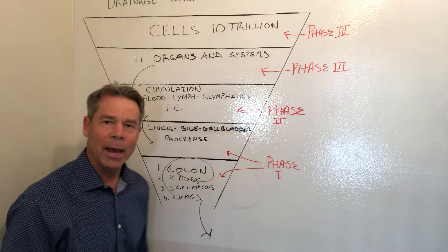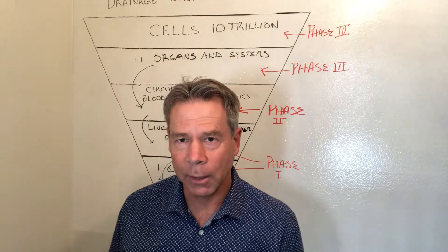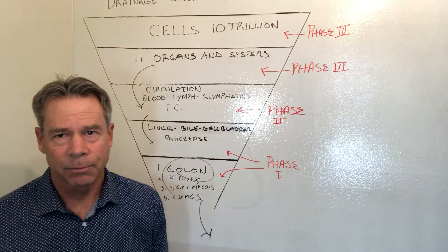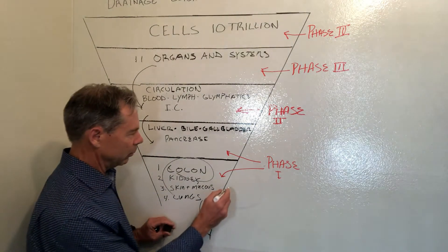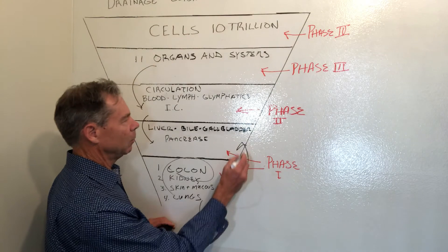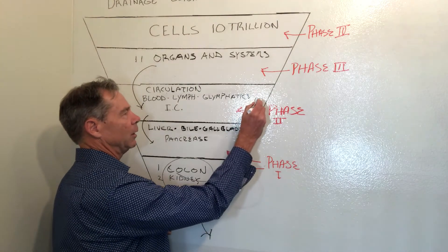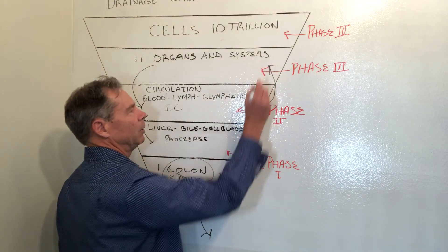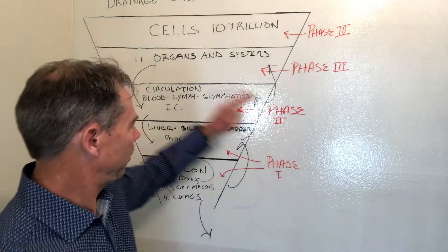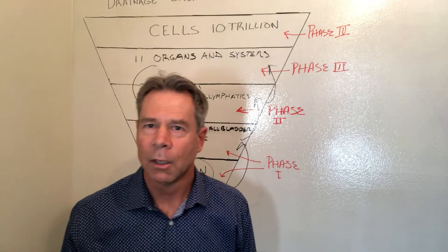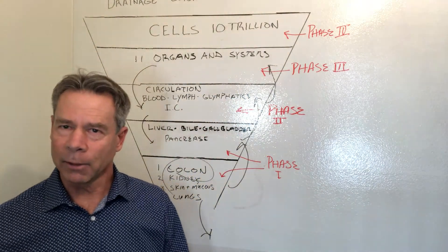Finally, we have a fully operating detoxification system. But we have to address it this way. We have to start with the colon and the gallbladder to get to the circulation, and finally up to the organ systems, because we've prepared and set the stage for this all to occur safely and effectively.